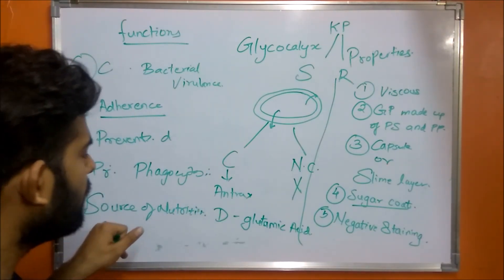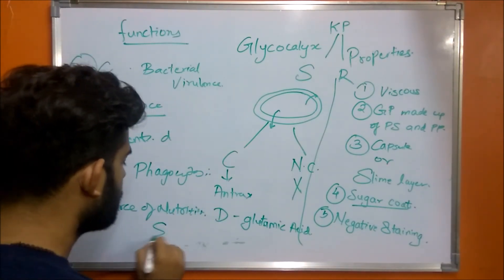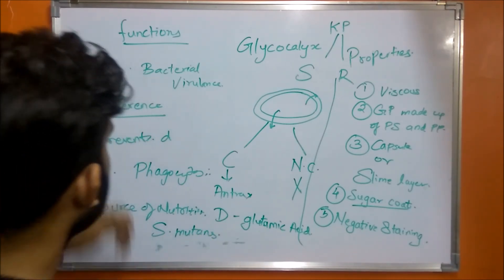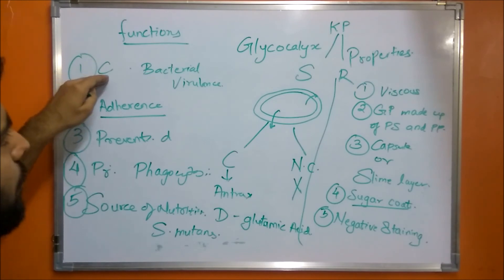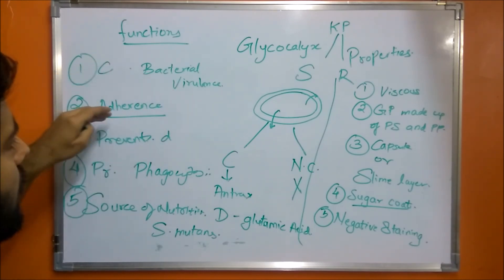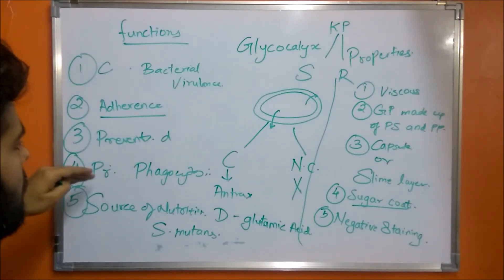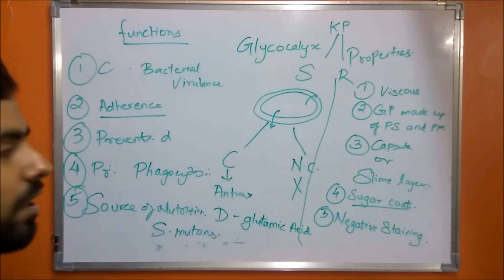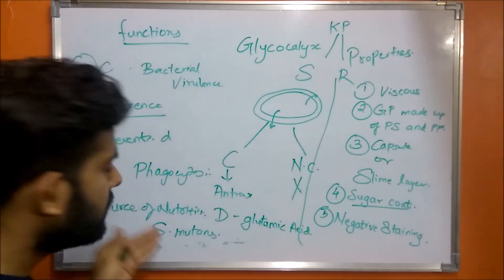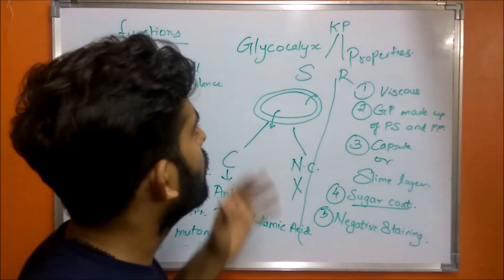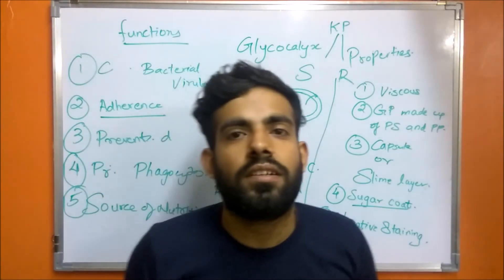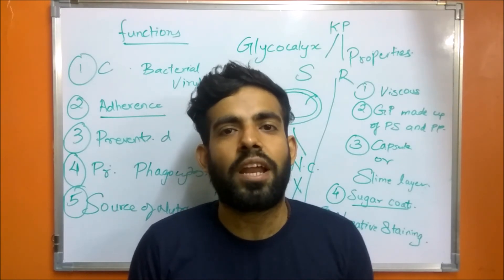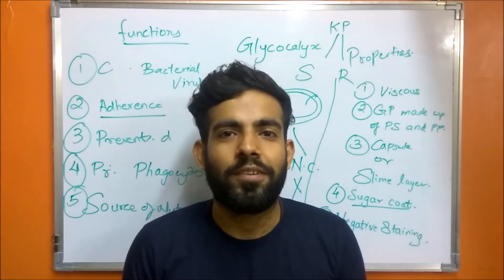An example for this source of nutrition is Streptococcus mutans. So the functions of glycocalyx are: contribution to bacterial virulence, adherence, prevention of dehydration, prevention of phagocytosis, and serving as a source of nutrition. This was all about glycocalyx. If you like the video, please like, subscribe, and share. Thank you.